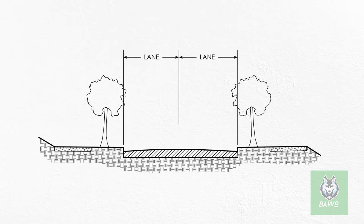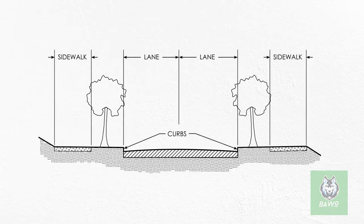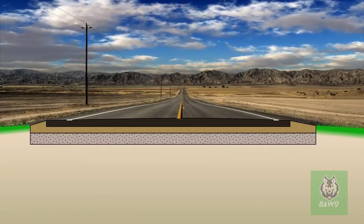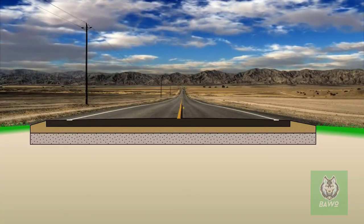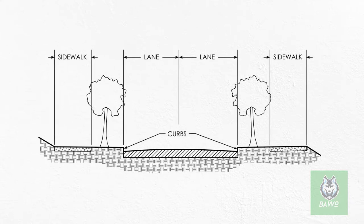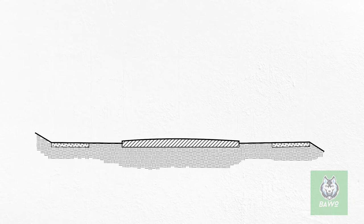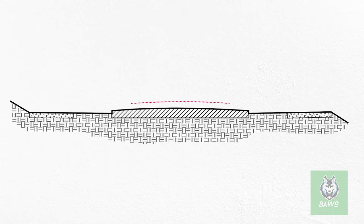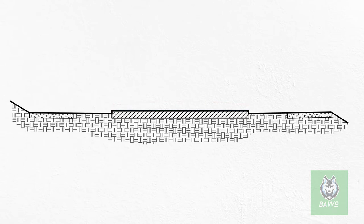The typical road cross-section can be considered a representation of what one would see if an excavator dug a trench across a roadway, showing the number of lanes, their widths and cross slopes, as well as the presence or absence of shoulders, curbs, sidewalks, drains, ditches, and other roadway features. The cross-sectional shape of a road surface, particularly in connection to its role in managing runoff, is called the crown.